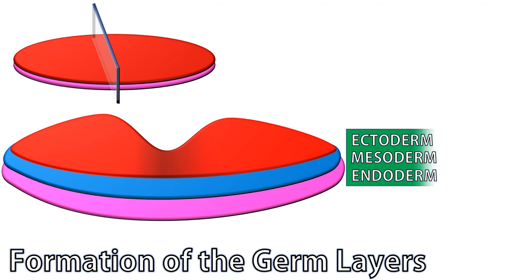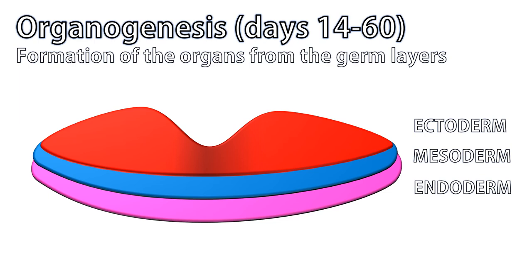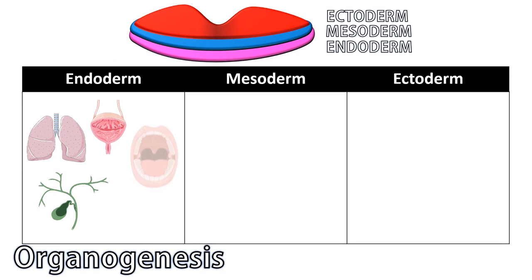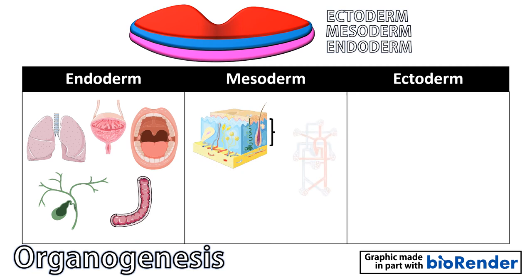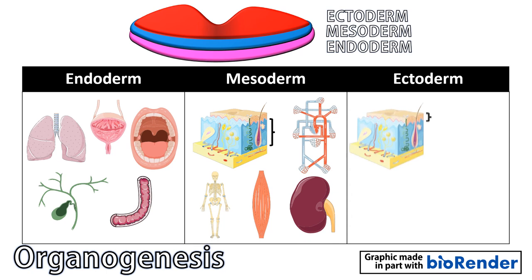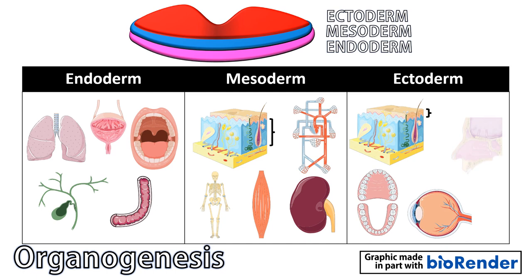Each germ layer gives rise to a variety of organs and tissues through organogenesis, which occurs between days 14 and 60 post-fertilization. The endoderm can turn into several structures, including the lungs, the bladder, various glands and ducts, the tonsils, and the lining of the digestive tract. The mesoderm gives rise to the dermis, the heart and cardiovascular system, the muscles, our bones, and our kidneys. The ectoderm gives rise to the epidermis, tooth enamel, parts of the eye, the outer ear, the nasal cavity, and a large part of our nervous system.